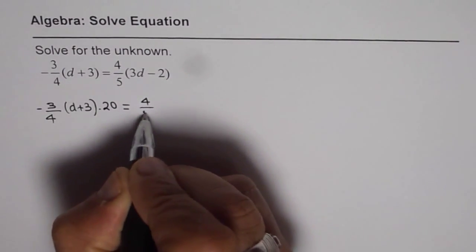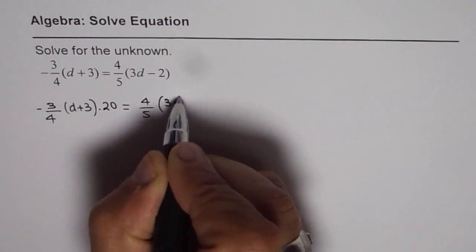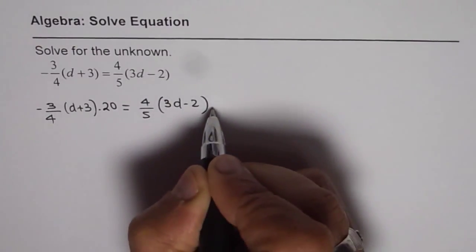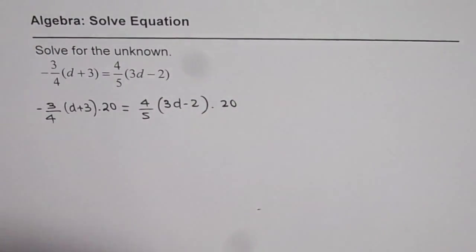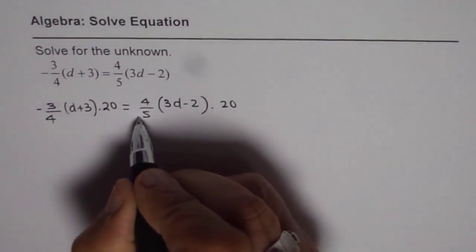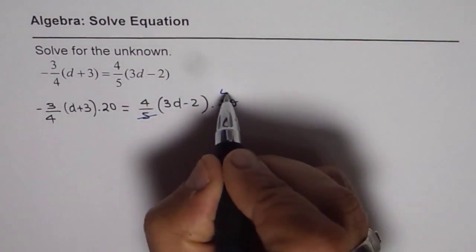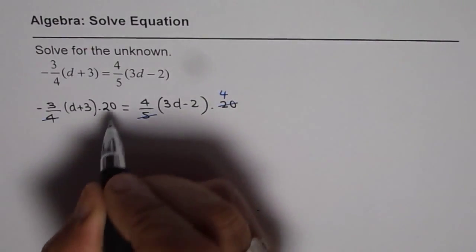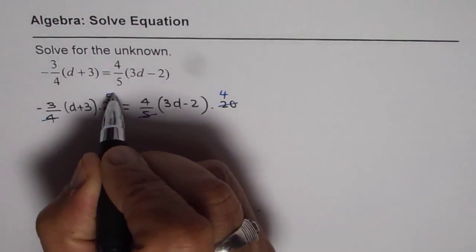Equals 4 over 5 times (3d minus 2). We will multiply by 20 on both sides. When you do that, you can divide 20 by 5 to get 4 here, and divide 20 by 4 to get 5 there.